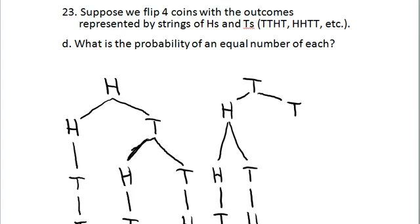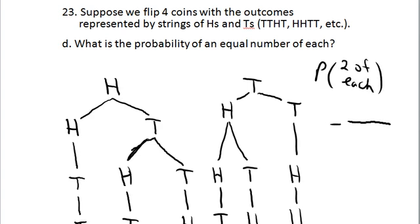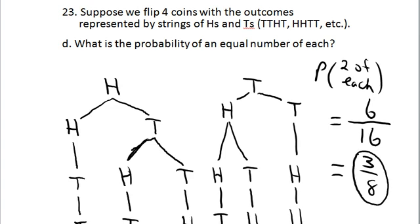Once you've chosen two tails, you have to choose a head for the last possibility. Counting up the valid branches: one, two, three, four, five, six. So this time I drew a partial tree diagram without drawing all 16 branches. The probability of getting two of each is six over 16, which reduces to three eighths.